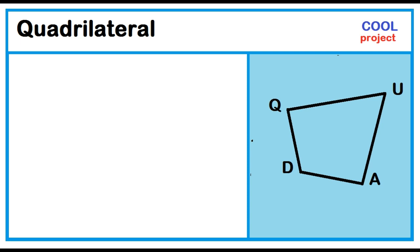To name a quadrilateral, just start from any vertex and read in a clockwise direction. Quadrilateral QUAD can be named also as UADQ, ADQU, and DQUA.